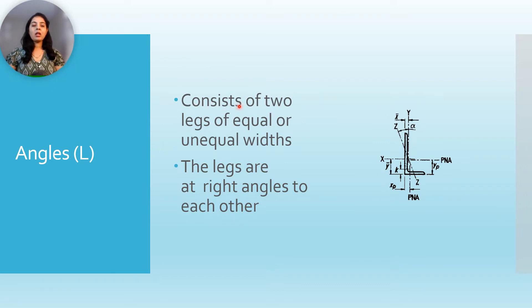Angles L consists of two legs of equal or unequal weights. The legs are at right angle to each other. So this is plastic neutral axis, and this is z axis, y axis, x axis. This is yp, distance of outermost layer from the plastic neutral axis, xp, y bar, x bar. Angle alpha, the angle between z axis and y axis, and this is the key.